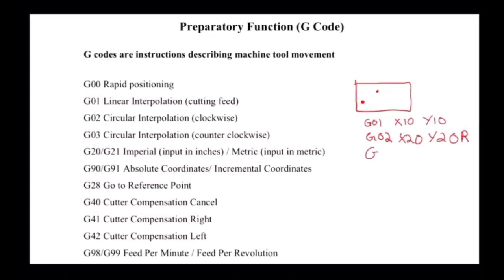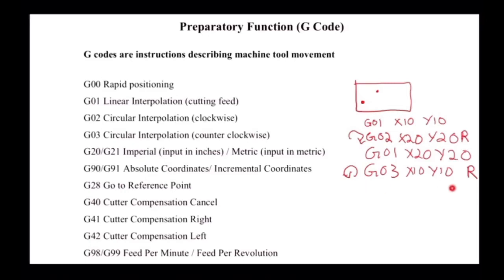For example: G01 X20 Y20, and then G03 X10 Y10 with the radius R specified. G03 is counterclockwise and G02 is clockwise. Depending on whatever is convenient — if you reached one coordinate and the arc goes counterclockwise, use G03; if it is clockwise, use G02. The codes are pretty simple. If you understand them with an example, it should be very easy to use, which is why I am providing examples along with explanation.